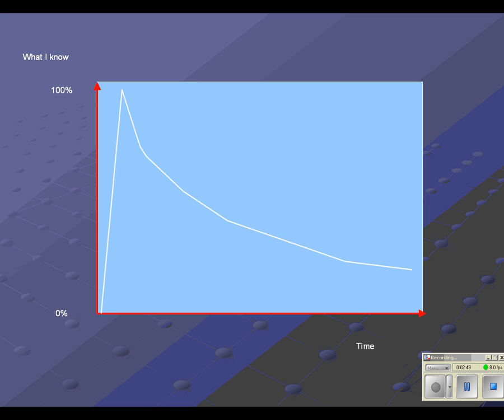Here we have a graph. We have a period of revision. The amount that you know is increasing. When you stop revising, as the time progresses, you forget what you've learnt.